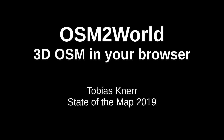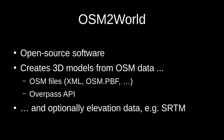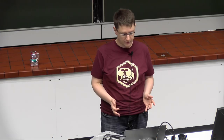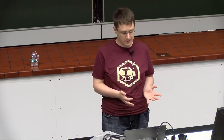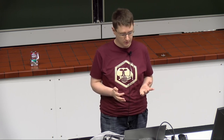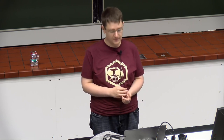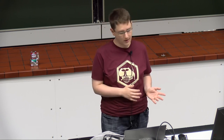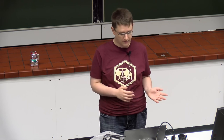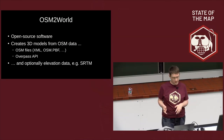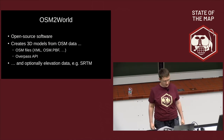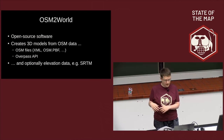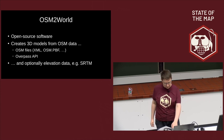I want to tell you a bit about OSM2World. OSM2World is a piece of open source software that I've been maintaining for quite a few years now. Simply speaking, the goal of OSM2World is to create 3D models from OpenStreetMap data. OpenStreetMap data comes in various forms, and OSM2World supports a few of them, such as OSM files in various encodings and Overpass API. It can also use elevation data — not part of OSM, but SRTM or other sources provide open licensed elevation data too.